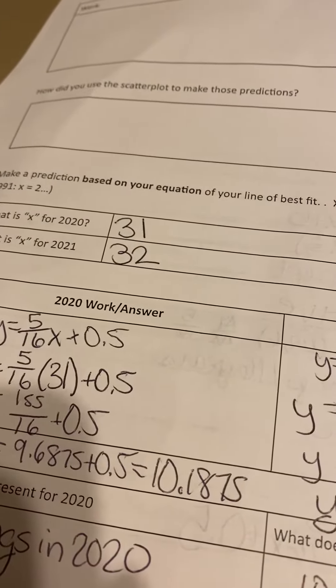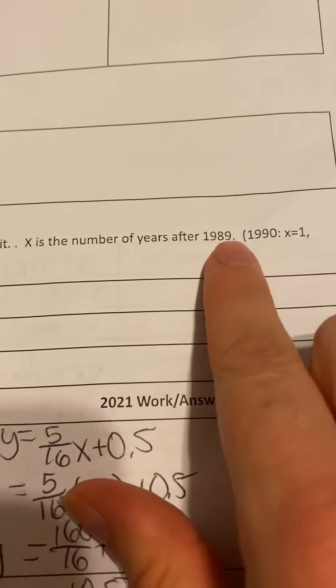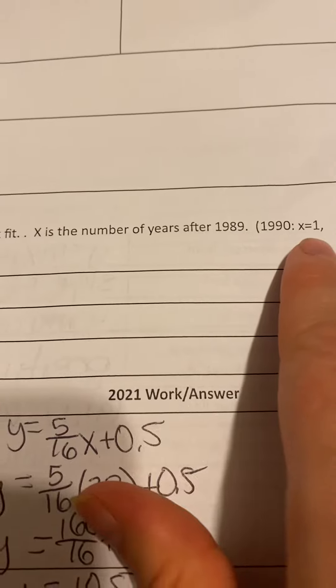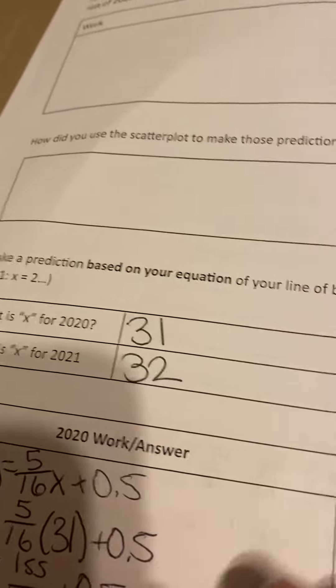Next, I would like to show you how you can make a prediction based on your equation of your line of best fit. So X is the number of years after 1989. So that would mean 1990 would be where X equals 1. 1991, X would equal 2, and so on.